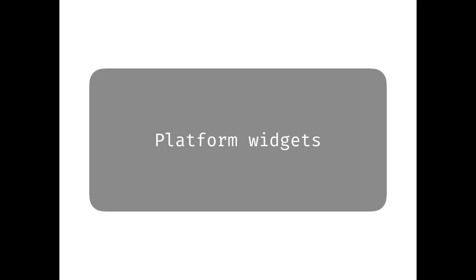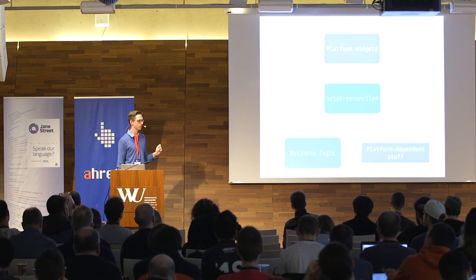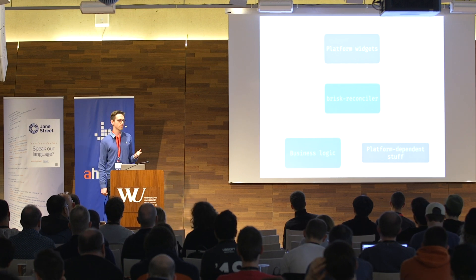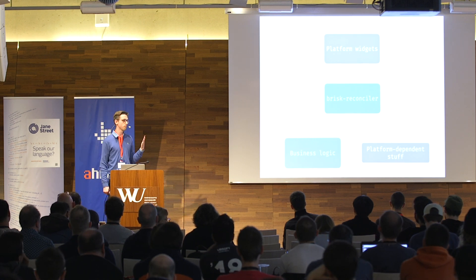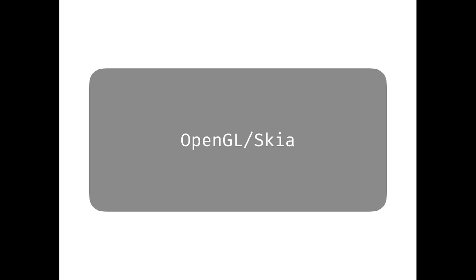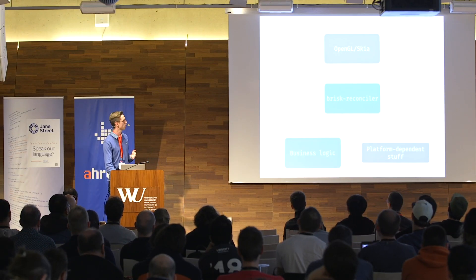Brisk uses platform widgets like Cocoa on macOS or UIKit on iOS, and Reverie uses drawing libraries like OpenGL. The gray boxes represent stuff that's different between Brisk apps and Reverie apps, but the blue stuff represents what's common. If you write an app in Reverie or Brisk, you can share business logic between them — just like with React and React Native.